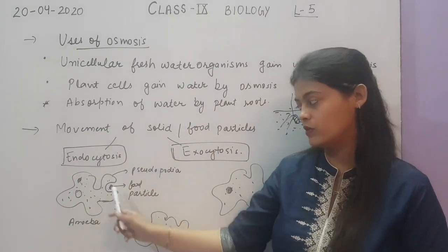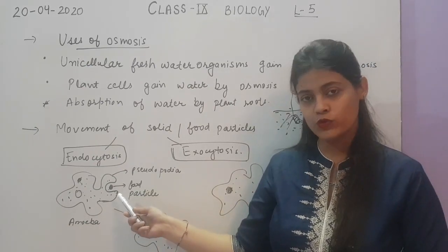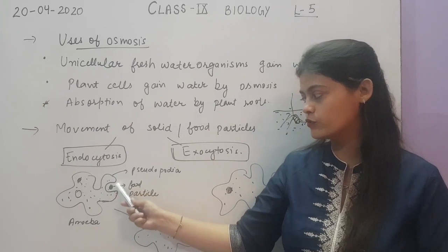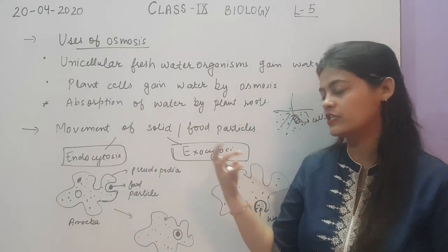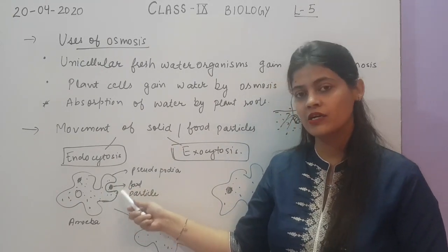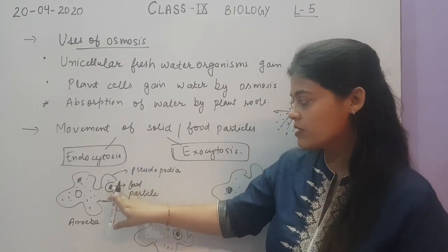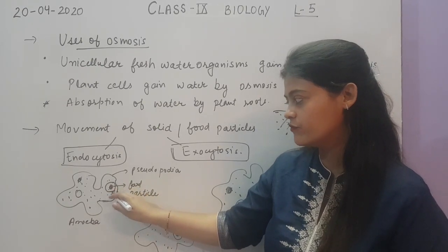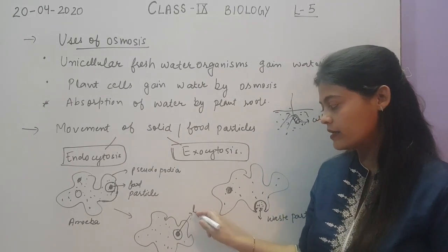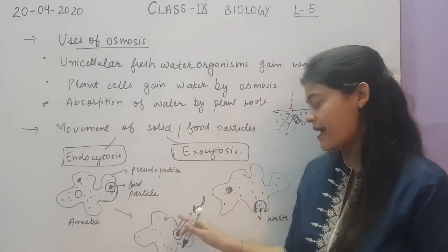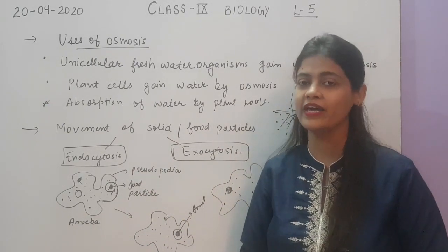Let us see cytosis in the case of amoeba. Amoeba takes water with the help of osmosis, but when it has to take food particles, as the food particle comes near the amoeba, there will be pseudopodia formation around the food particle. Pseudopodias are used for movement as well as collection of food particles. When the food particle comes near the amoeba, pseudopodias form around it, and the membrane from both sides fuses. A vacuole-like structure engulfs the food particle. This process of engulfing the food particle is called endocytosis.